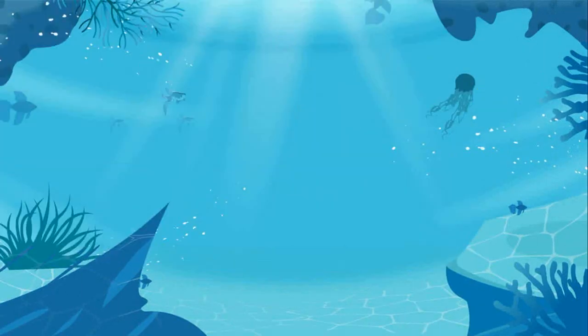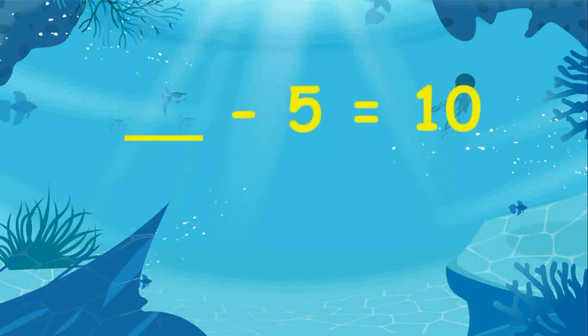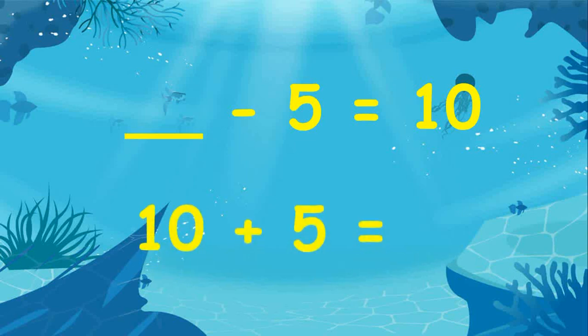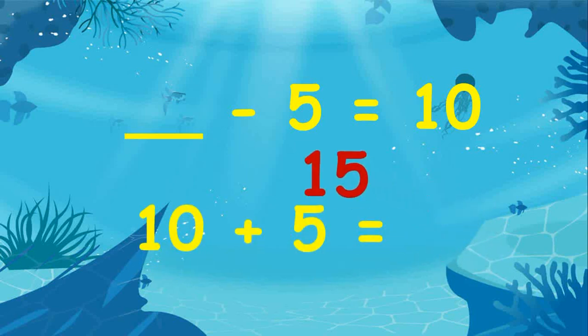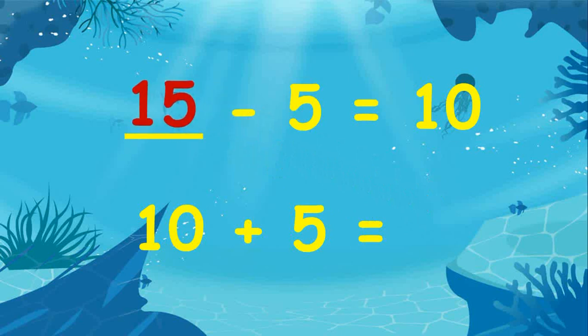10 plus 5 is equal to 15. How about blank minus 5 equals 10? To find the missing number, add 10 and 5. 10 plus 5 is equal to 15, therefore 15 minus 5 equals 10.